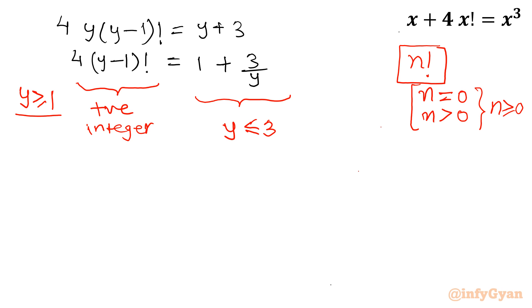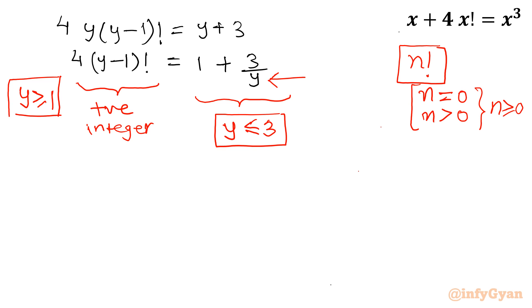For the right hand side to remain a positive integer, y cannot exceed 3, because once y is greater than 3, the term 3/y becomes a fraction — such as 3/4, 3/5, 3/6, and so on — making 1 + 3/y a decimal, not an integer. So y must be less than or equal to 3. Combining both constraints, y is 1, 2, or 3.